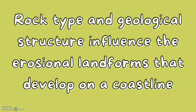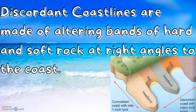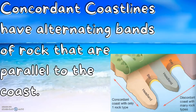Rock types and geological structures influence the erosional landforms that develop on a coastline. Discordant coastlines are made of alternating bands of hard and soft rock at right angles to the coast. Concordant coastlines have alternating bands of rock that are parallel to the coast.